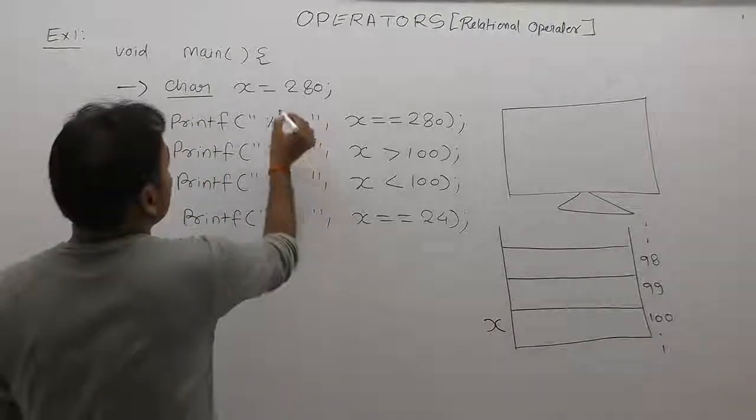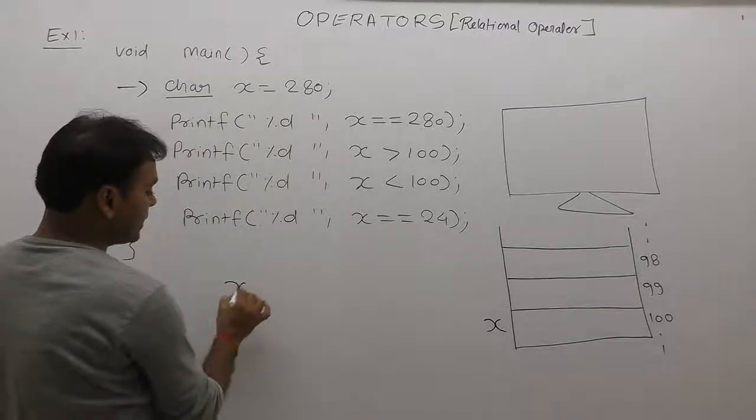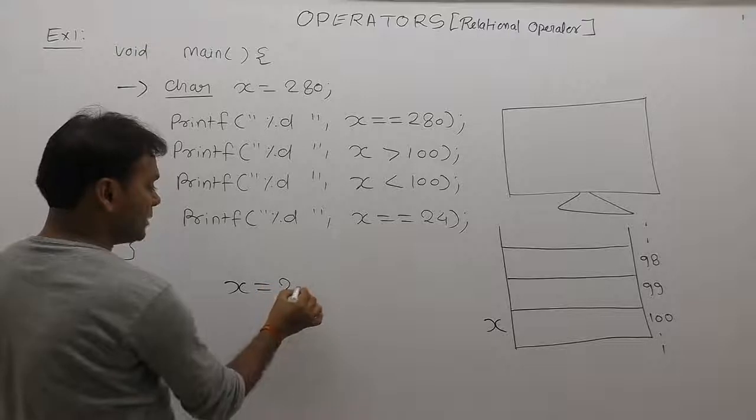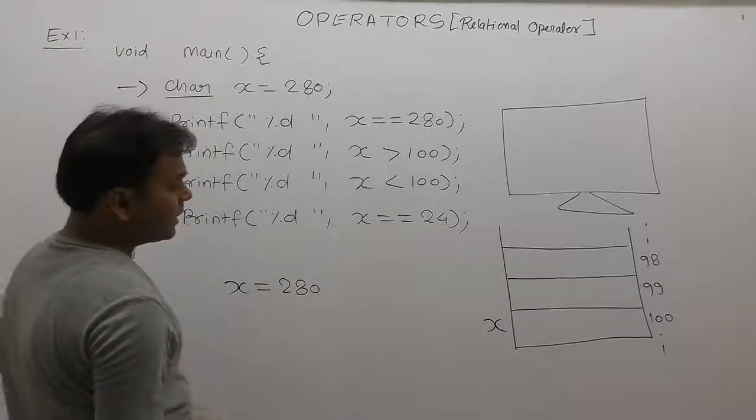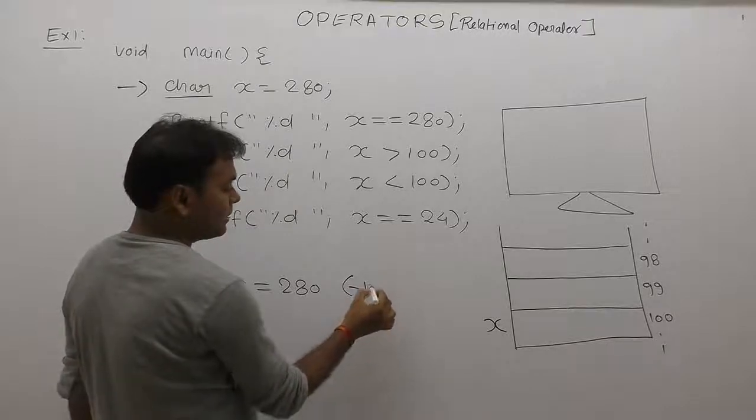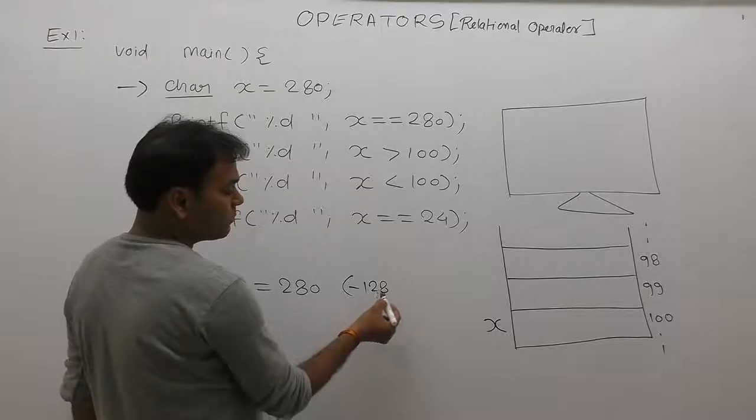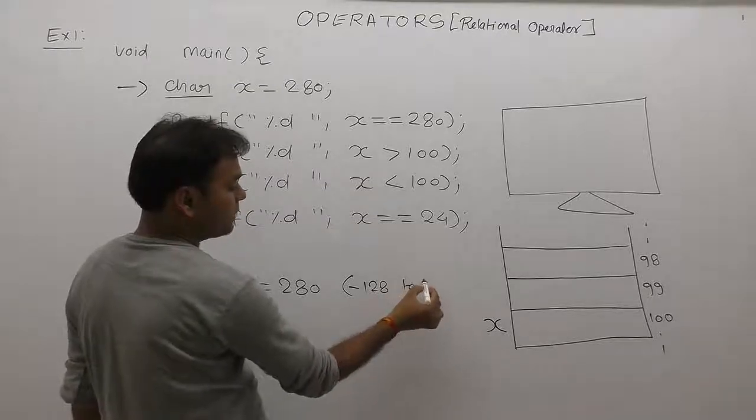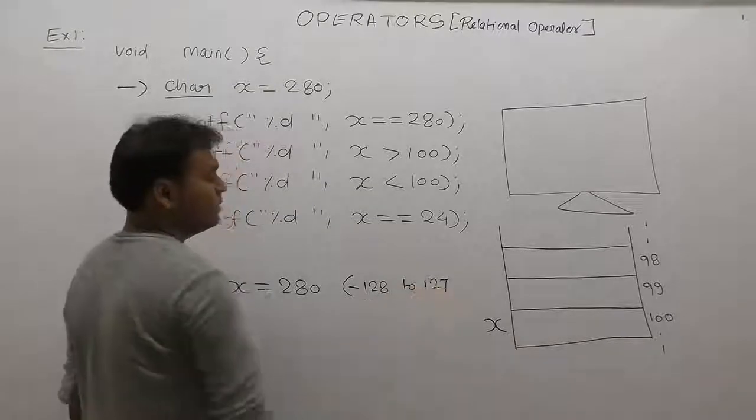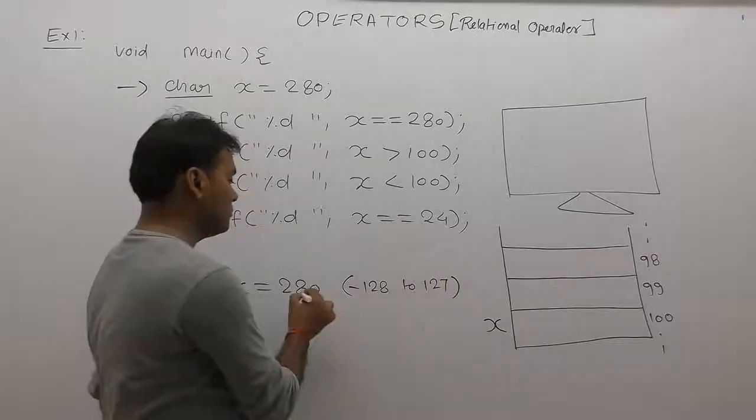Next one, what is the initial value of x? In character, what is the minimum and maximum range of character? Minimum value is -128, maximum value is 127. Means you cannot store a number greater than 127. But we are trying to assign 280 to x.